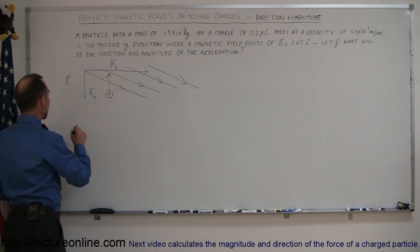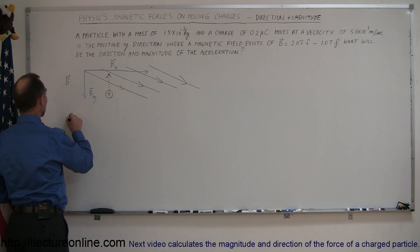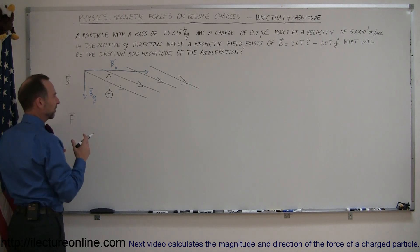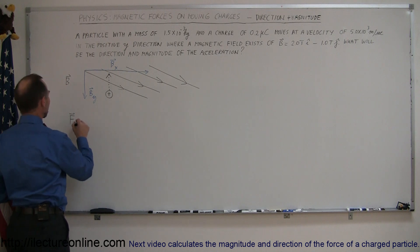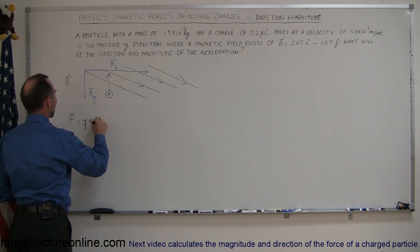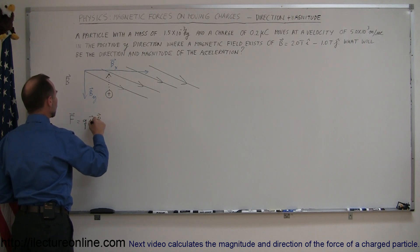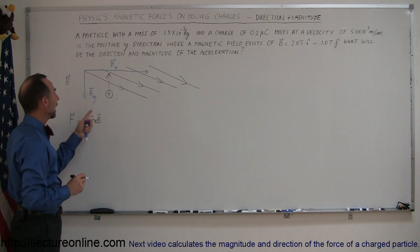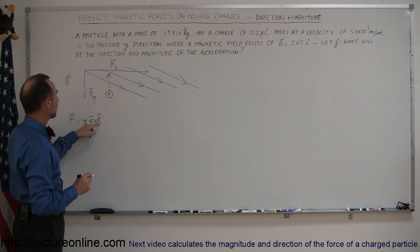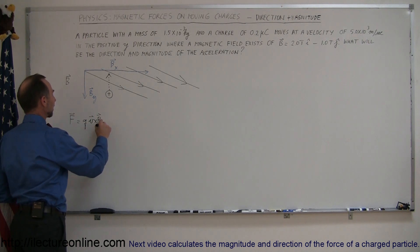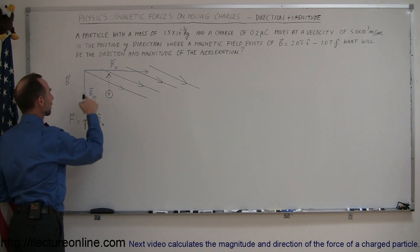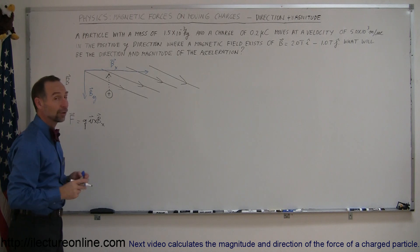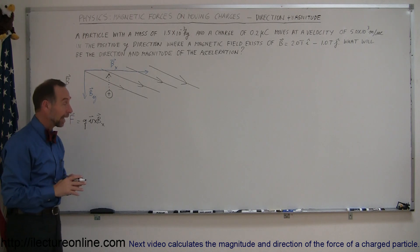So we can say that the magnitude of the force F — let's write down the equation first — F is equal to Q times V times B, and since this is a vector, we'll use the cross product. Notice that the only component that's of interest to us is the x component, because the y component will not contribute any force.